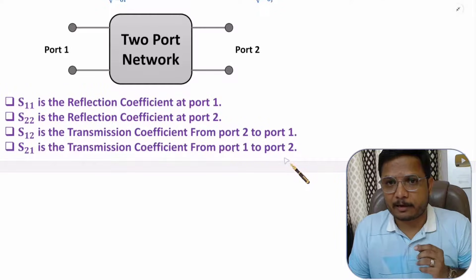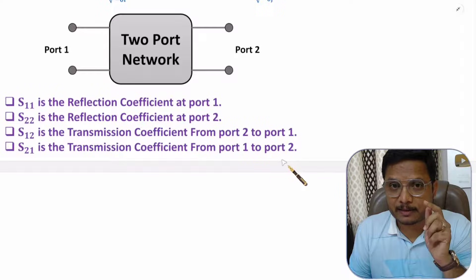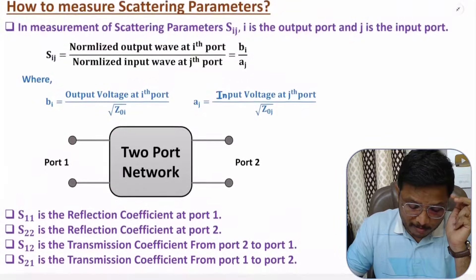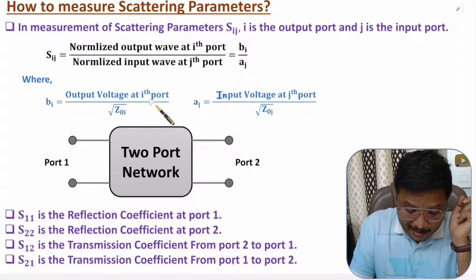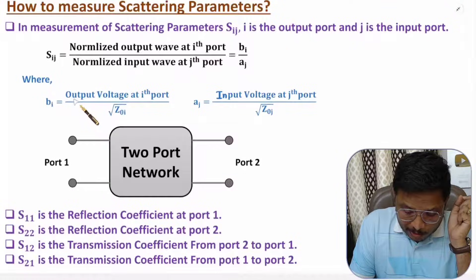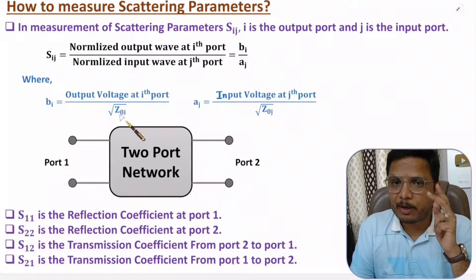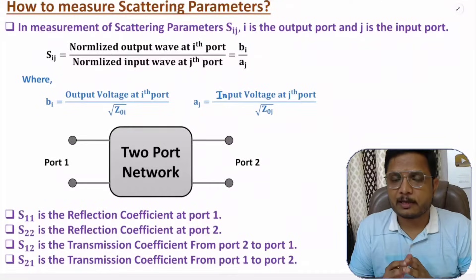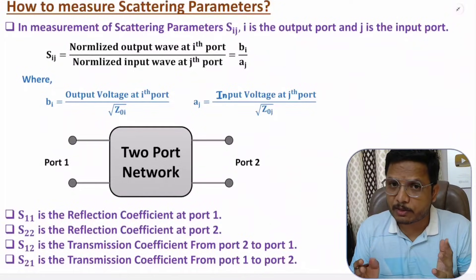That is how we do measurement. Scattering parameters explain how much scattering of a wave happens. Always remember, measurement is done with normalized waves, and those normalized waves are referenced to characteristic impedance — voltage divided by the square root of Z₀. I hope you have understood this. If anything you would like to share, note it down in the comment section. I will be happy to help you. Thank you so much for watching this video.